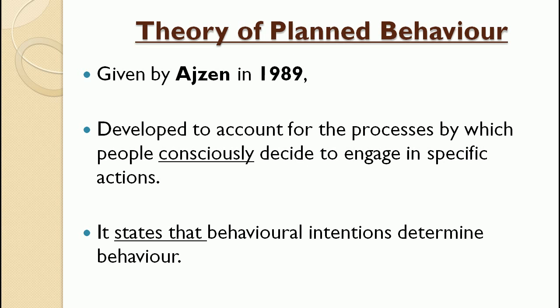In this video, what we are going to study is the Theory of Planned Behavior. This is a very important theory, so I need your full attention. Who gave this theory? I am going to emphasize that you should always remember the name of the psychologist and the year. This theory was given by Ajzen in the year 1989. Please remember these two things — they are very important. What he did was, he developed it to account for the processes by which people consciously decide to engage in specific actions.